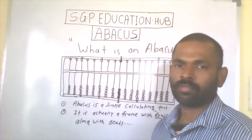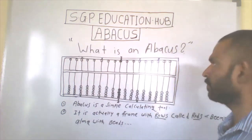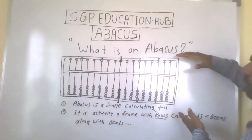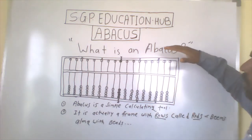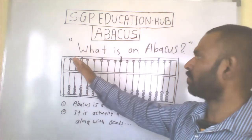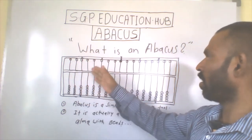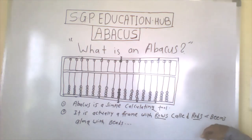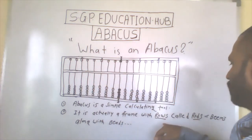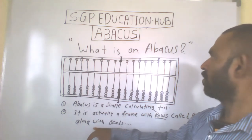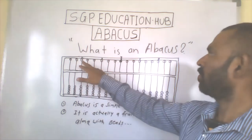Let's go to the topic. The Abacus looks like a frame which consists of many rods, called rods or beams. These rods or beams consist of beads.